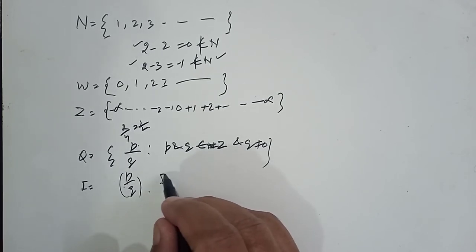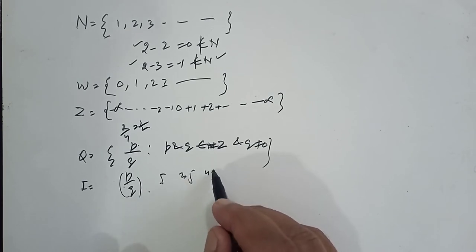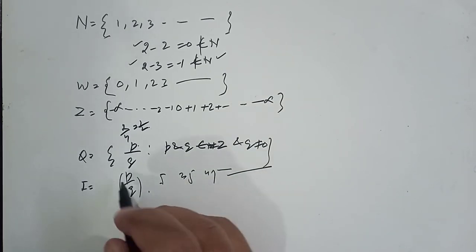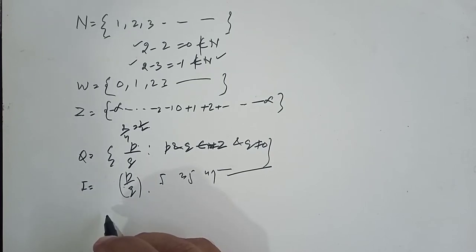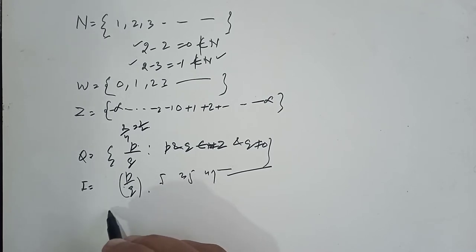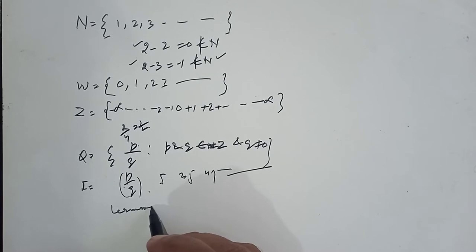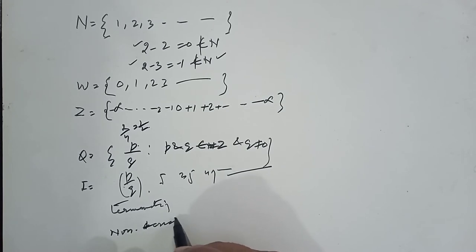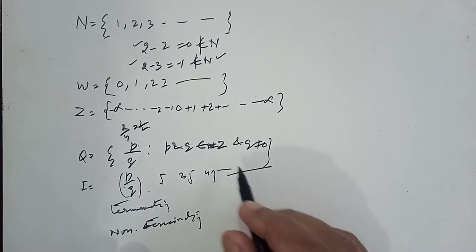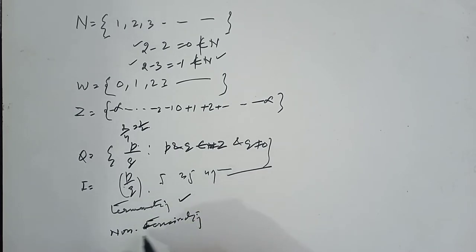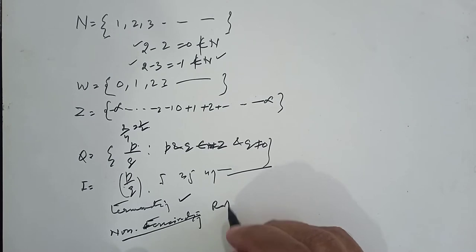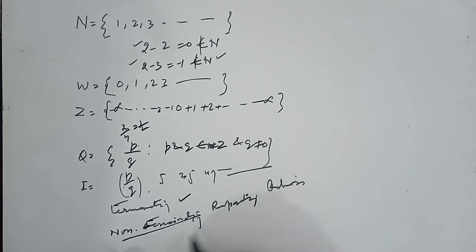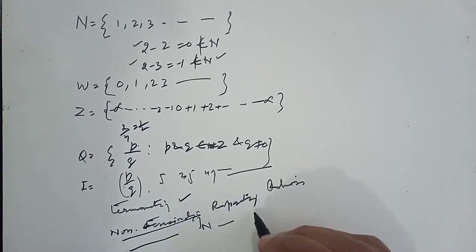Similarly, we define the decimal number system. In the decimal number system, we have two kinds of numbers: terminating or non-terminating. Terminating numbers are rational numbers. Non-terminating repeating numbers are also rational numbers. But non-terminating non-repeating numbers are irrational numbers.